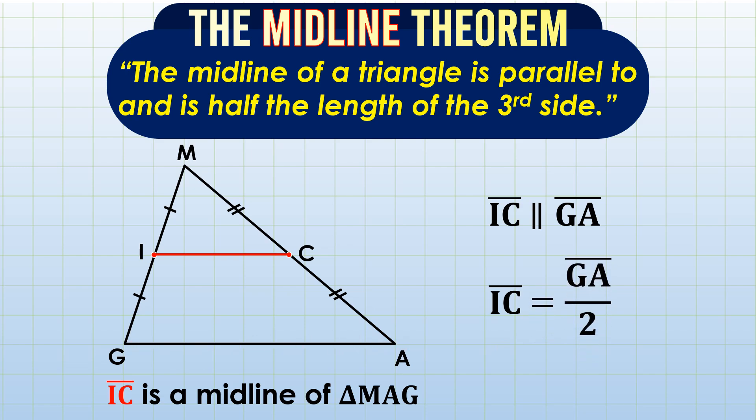Observe also that there could be three midlines for every triangle. For example, aside from this midline, you could also have a midline here if this one is the midpoint of GA, and another is here. Again, every triangle has three midlines or mid-segments. Now, let us apply the midline theorem.